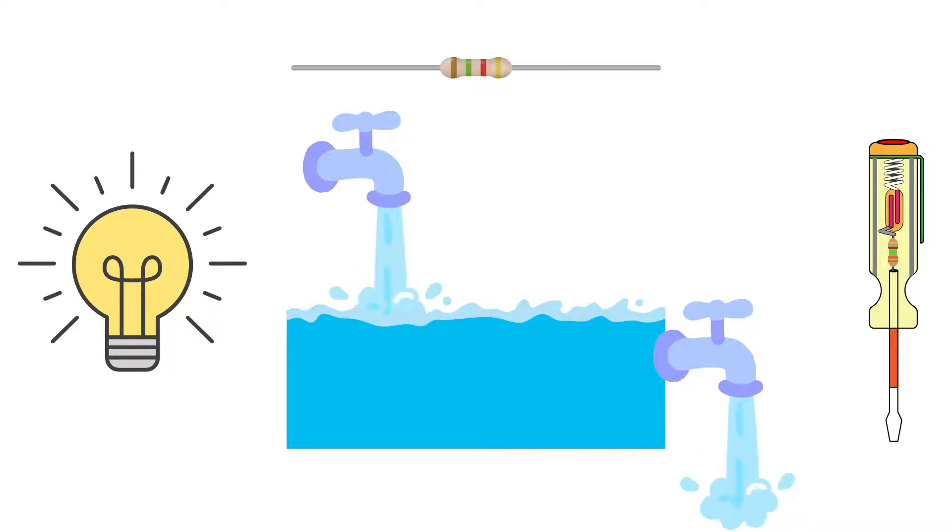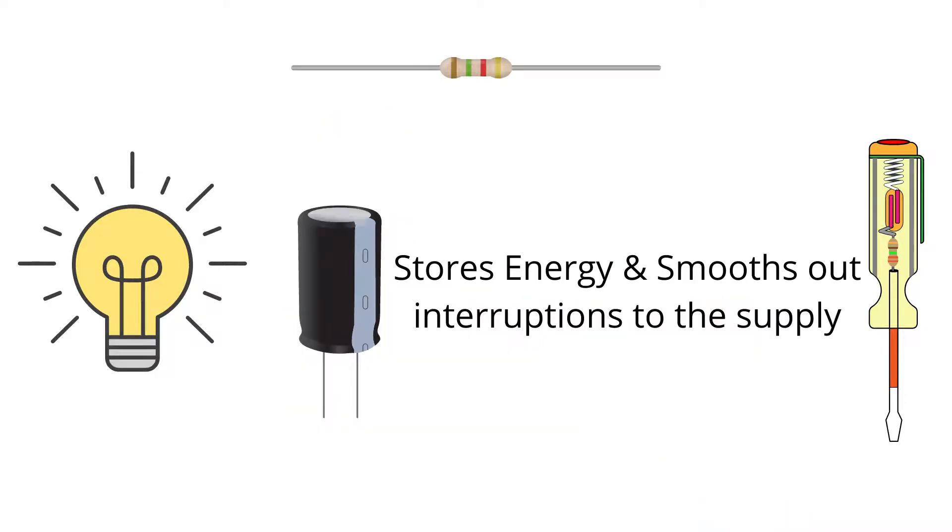The storing water and smoothing out interruptions of water delivery in this example is what exactly a capacitor does in electrical systems. A capacitor acts like the water tank by storing energy and releases this energy to smooth out interruptions to the supply.